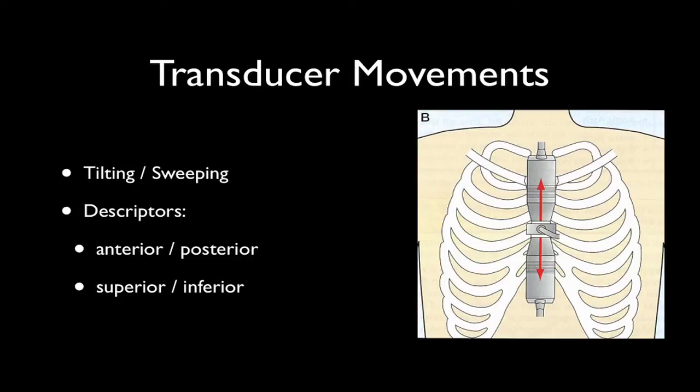The next movement is a tilt or sweep. This is where the angle of the transducer is changed but the position remains constant. The angle is changed by tilting the broad side of the transducer, such that the beam is directed more anteriorly or more posteriorly, or perhaps more superiorly or more inferiorly. The descriptor refers to the direction the beam is being pointed rather than the movement itself.